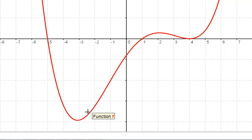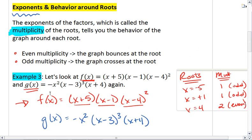So this is how we use multiplicity, or the exponents, to determine the behavior around the roots, whether we cross the x-axis or whether we bounce. Let's also look at g.